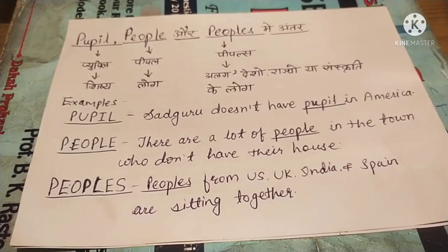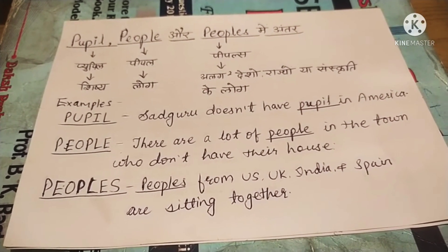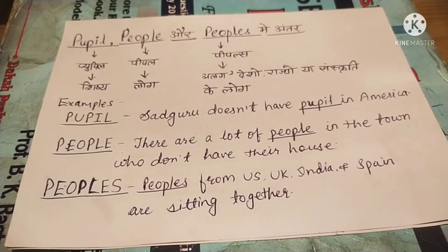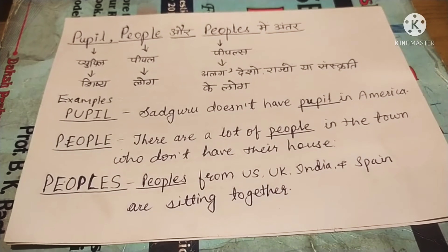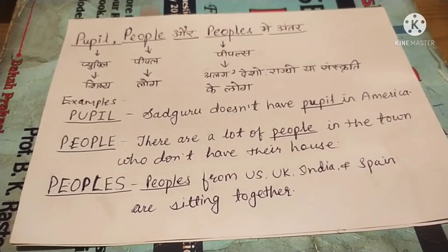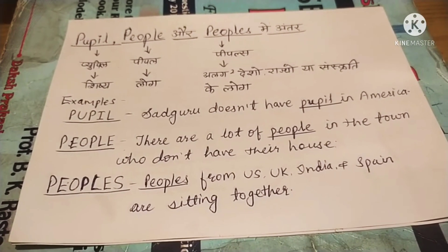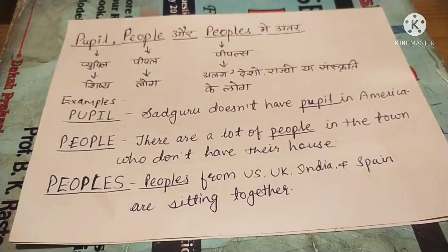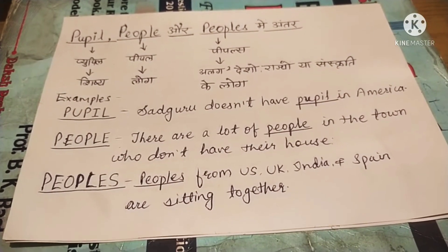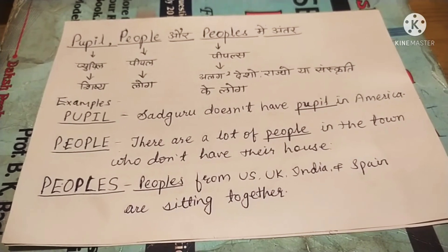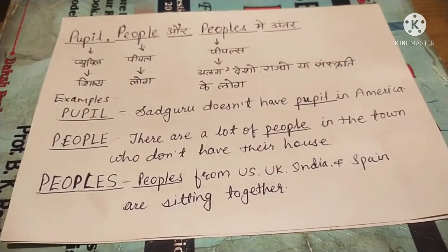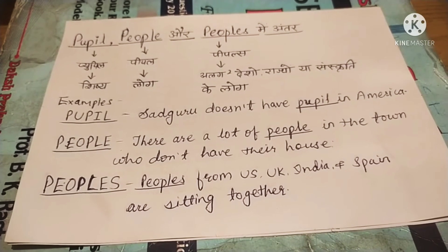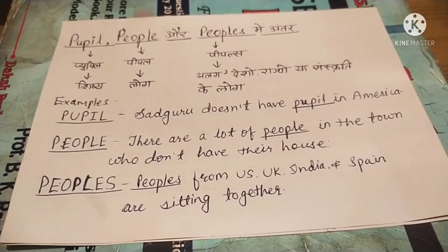Jo pupil word hai, uska matlab hota hai shishya — koi kisi guru ka shishya. Toh uske liye hum log bolte hain pupil. For example, the sentence underlined here: 'Sadhguru doesn't have people in America.' Sadhguru ke America ke under log nahi hain — toh aise sentence mein hum logon ne pupil use kiya. Pupil matlab shishya.